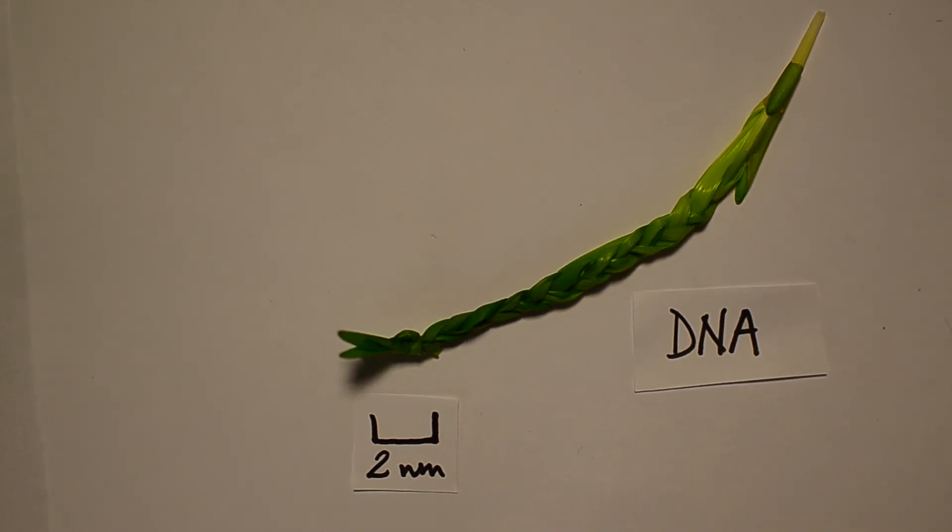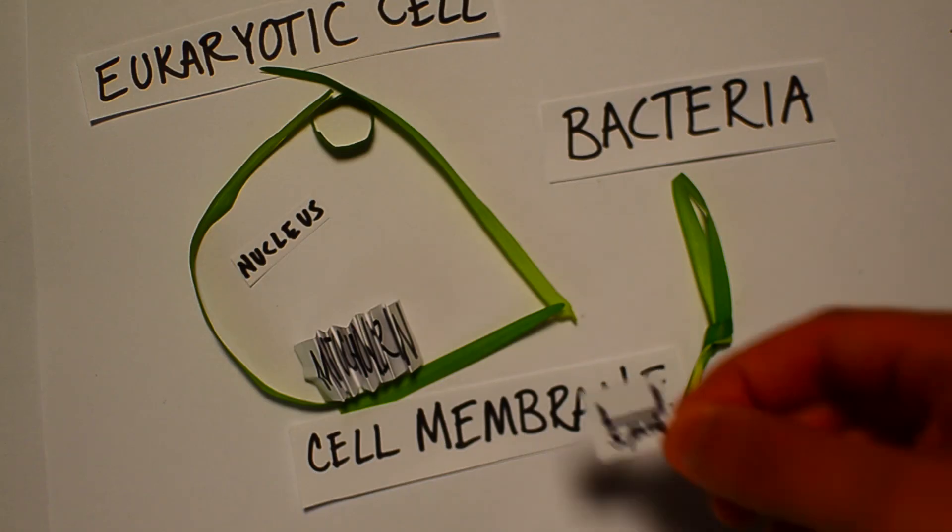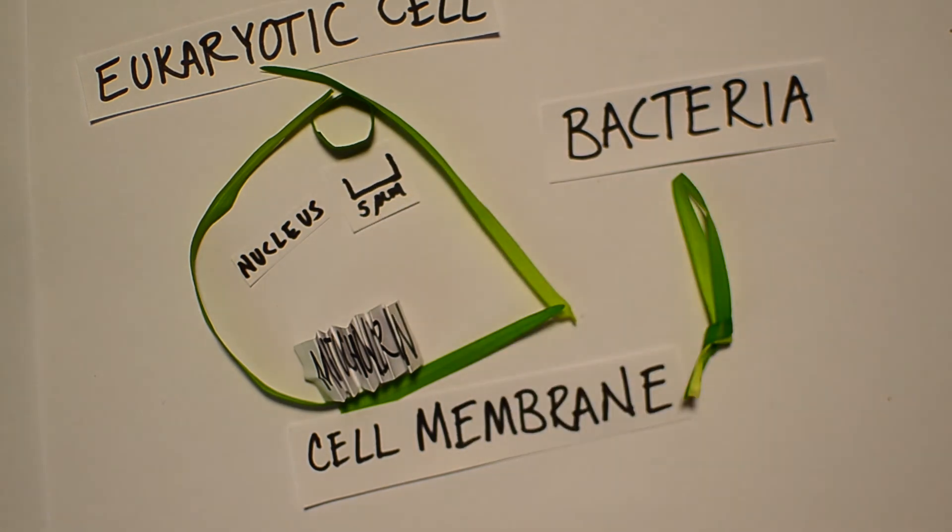With that in mind, you'll be glad to know that the nucleus has a diameter of 5 micrometers, which is 25,000 times larger than the diameter of DNA.